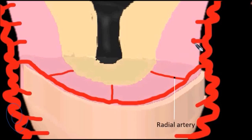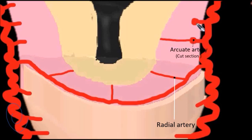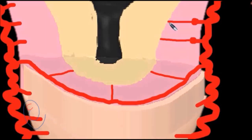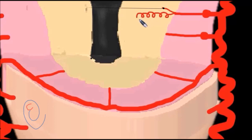They are called radial arteries because they look like a radius of a circle, extending from the periphery towards the center. At the junction of the myometrium and the endometrium, the radial artery divides into two branches: the basal artery and the spiral artery.